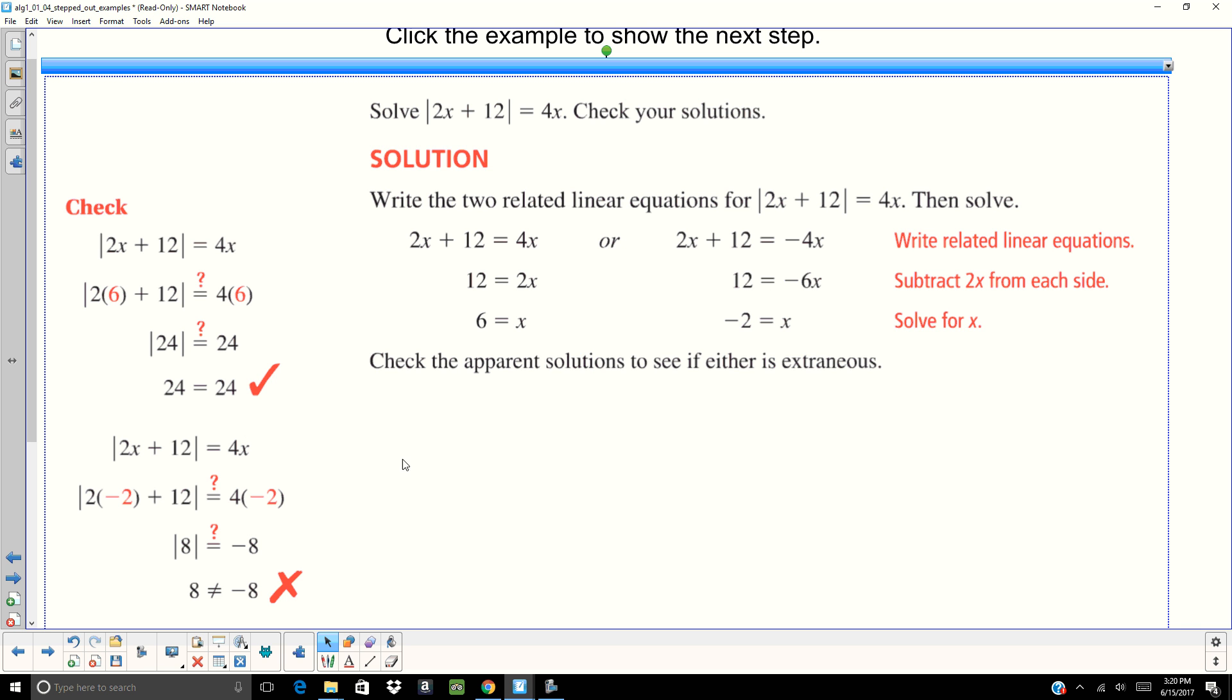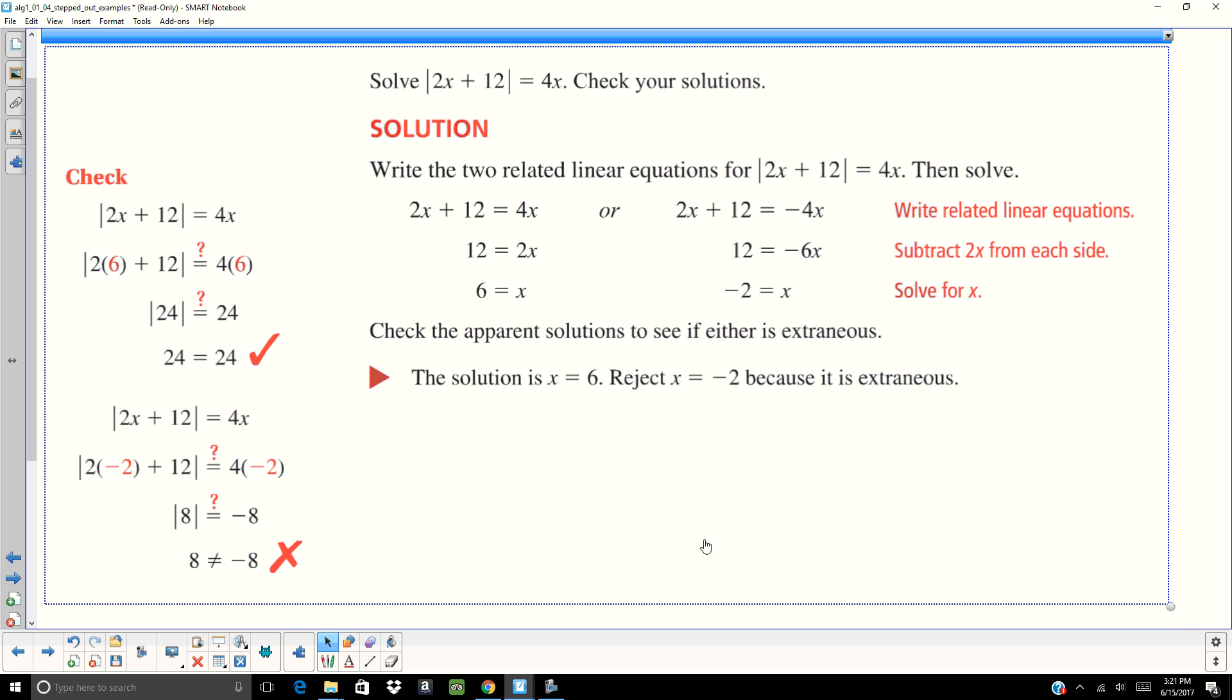Now I'm going to check out negative 2. Plug in negative 2. Negative 2 times 2 is negative 4 plus 12 is 8. 4 times negative 2 is negative 8. Well, then I take that absolute value and I get 8 equals negative 8, which is not a true statement. So I've done everything mathematically correct here. What I did was I created an extraneous solution. It's just a false solution. So my solution is only X equals 6. That's the only one I would put down on the answer line.